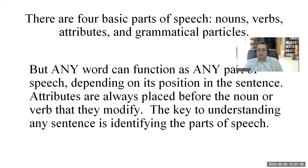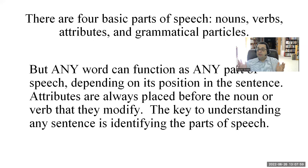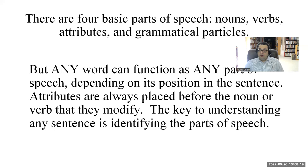Here's another respect in which Classical Chinese is very different from English. There are four basic parts of speech — this is my theory, not necessarily found in any textbook, but this is how I've been teaching Classical Chinese at Penn for over 25 years: nouns, verbs, attributes, and grammatical particles. You don't need more than that. More than that, any word can function as any part of speech depending on its position in the sentence. Attributes are always placed before the noun or verb that they modify, which is why I don't distinguish between adjectives and adverbs — syntactically they look identical.